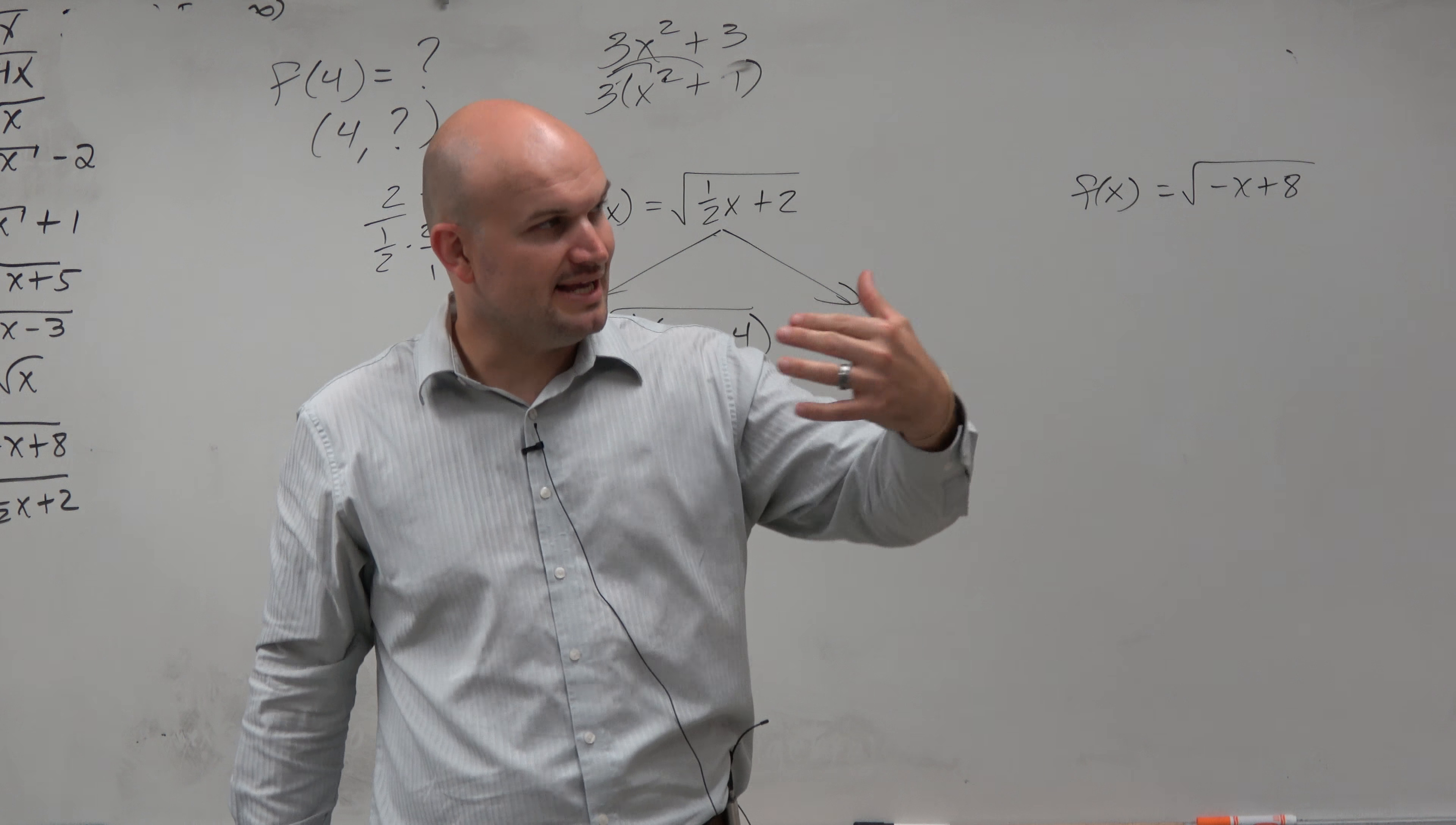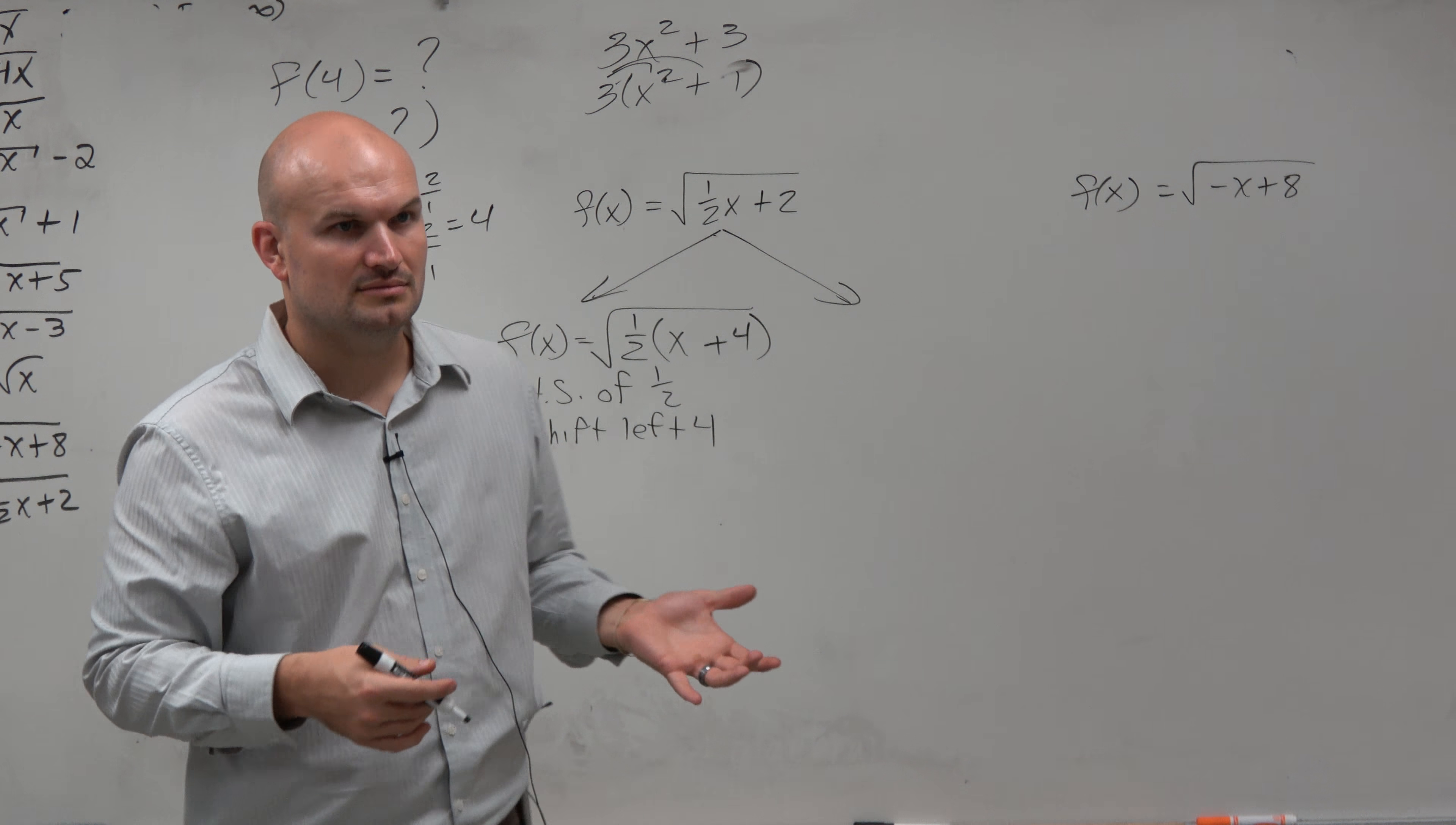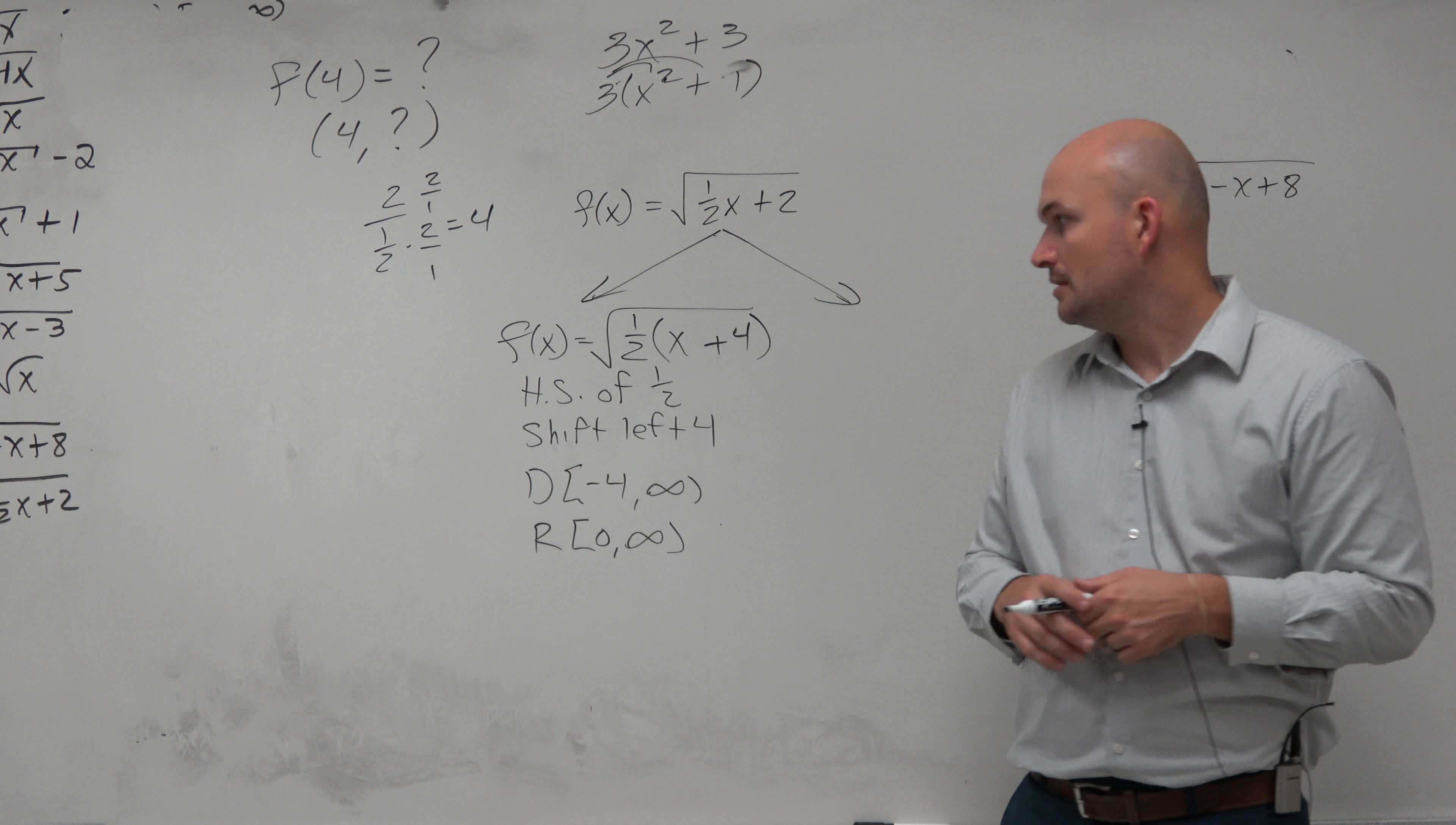So by taking our equation, when we have that b and c, by writing it in form c, now we can see there's a horizontal stretch of 1 half, and you're going to shift the graph left 4. So therefore, we could say that the domain is now negative 4 to infinity, and the range is 0 to infinity. Because all the graph did was get shifted to the left. It didn't get shifted up or down, so the range would be unchanged.